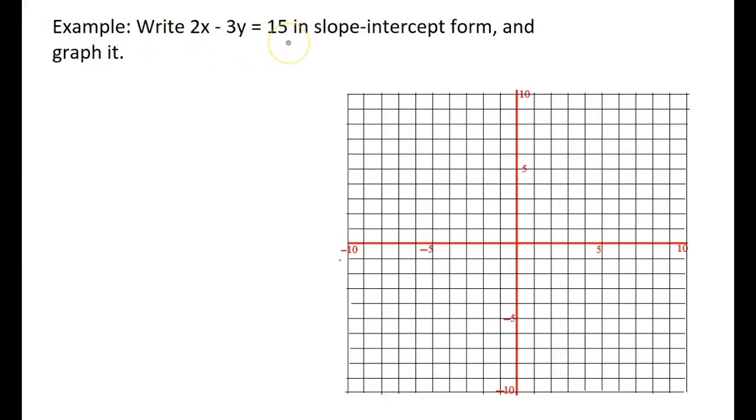Let's take 2x - 3y = 15 and convert it to slope-intercept form and then graph it. So to convert it to slope-intercept form, we're going to solve for y. I'm going to subtract 2x from both sides, which gives me that. Then I'm going to divide by -3 to get y by itself. I'm going to get 2/3x - 5. There's our slope, and there's our y-intercept.